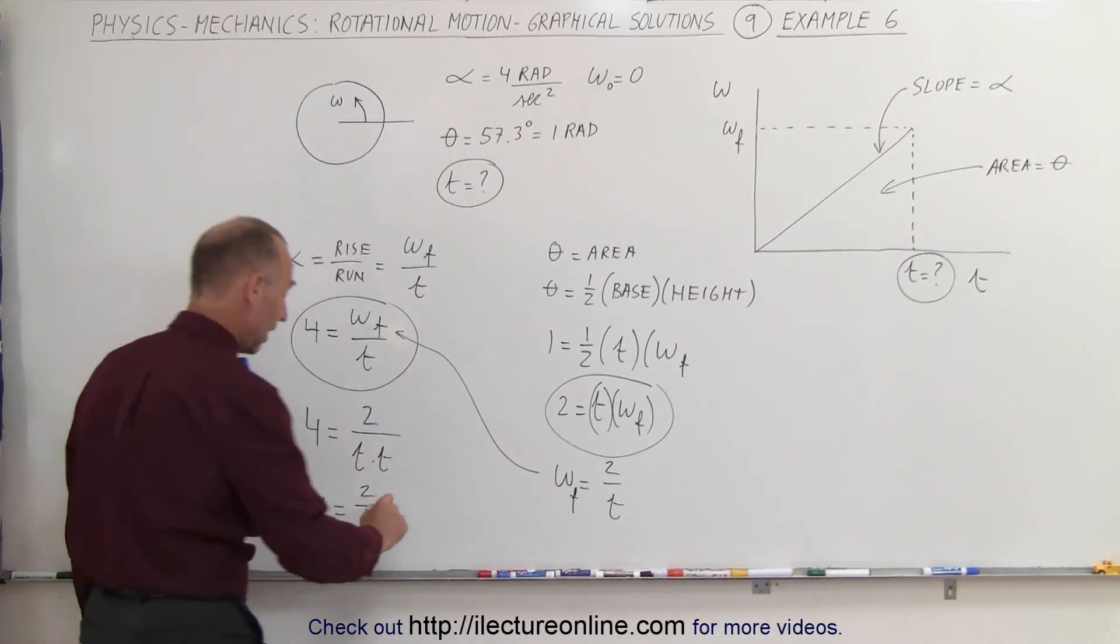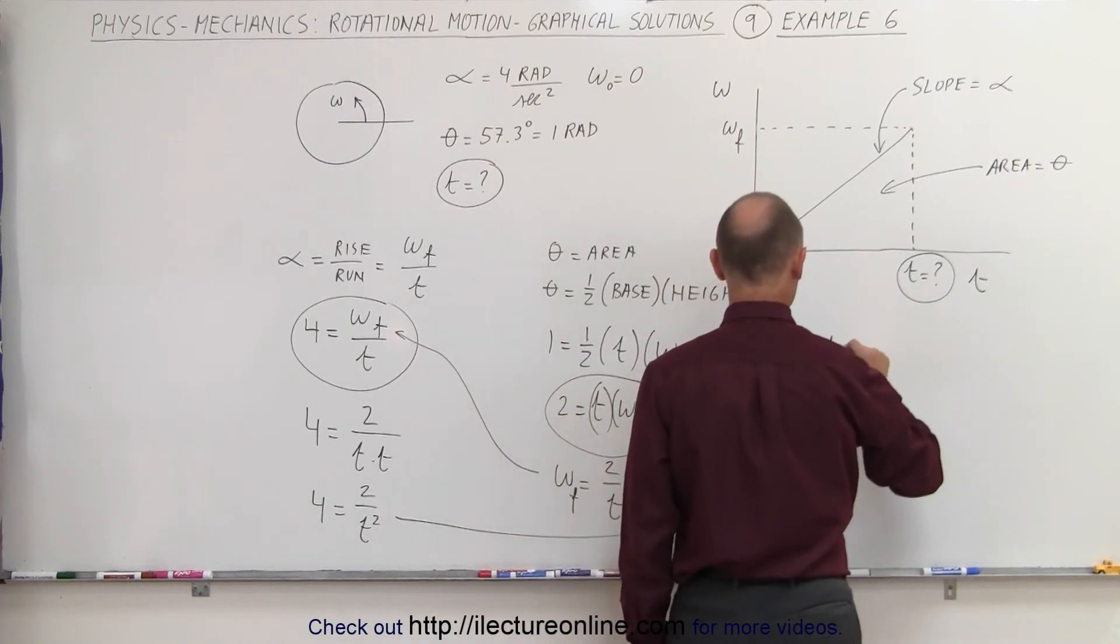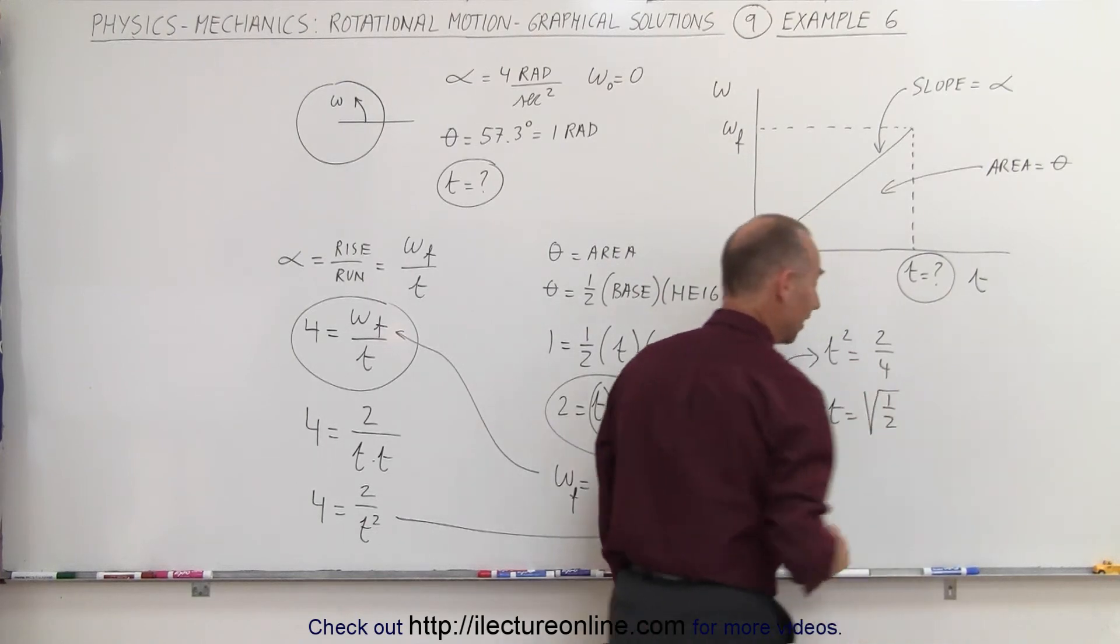We can solve that one for time. Let's go over here, and we can say that t squared is equal to two divided by four, or t is equal to the square root of one half.